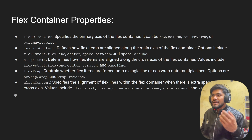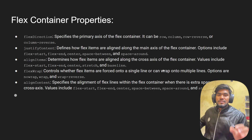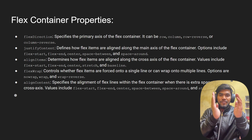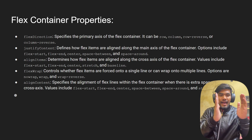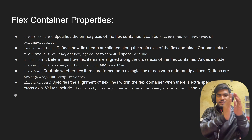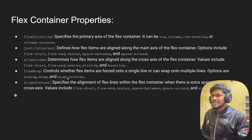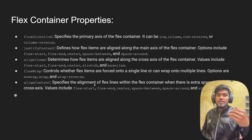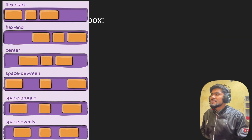Flex wrap is one of the most important properties for making responsive layouts. It controls whether flex items are placed on a single line or wrap to multiple lines. For example, if you have a flex container with five items but it can only fit two items in one row, the remaining items will wrap to the next line. Align content is used for alignment of multiple flex lines within the container.